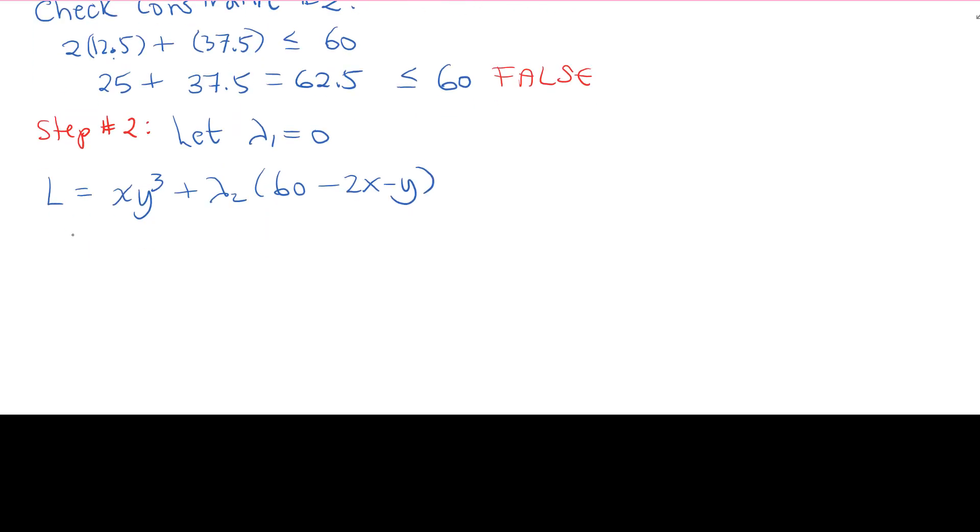We go take all of our derivatives and see what we get. We get y cubed minus 2 lambda 2 for the first one, 3xy squared minus lambda 2 for the second one, and 60 minus 2x minus y for the third one. Set everything equal to 0.